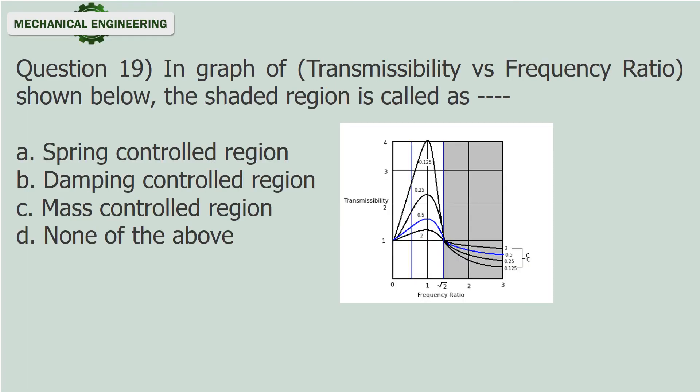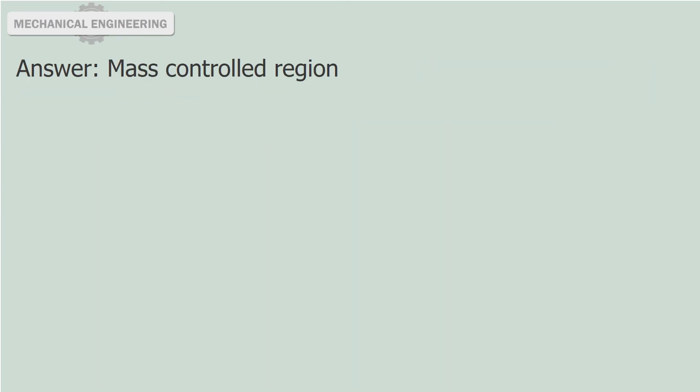Question 19: In the graph of transmissibility versus frequency ratio as shown below, the shaded region is called as — fill in the blank. a. Spring controlled region. b. Damping controlled region. c. Mass controlled region. d. None of the above. Answer: Mass controlled region.